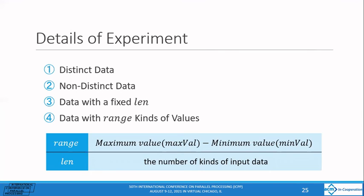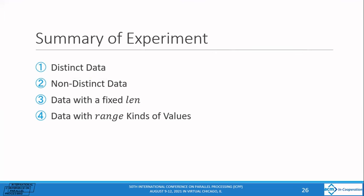These are distinct data, non-distinct data, data with a fixed range, and data with range kinds of values. The range here refers to the difference between the maximum and minimum values of the element of the input data. The maximum and minimum values of the input data are max val and min val. The results just described were particularly characteristic of the algorithm. Since the details of each experimental results are described in the paper, we will omit them here.